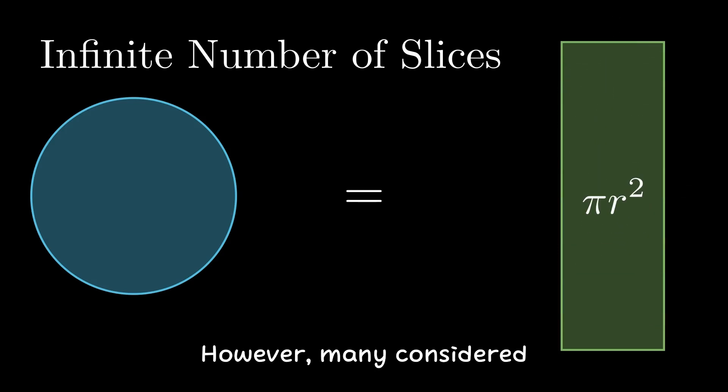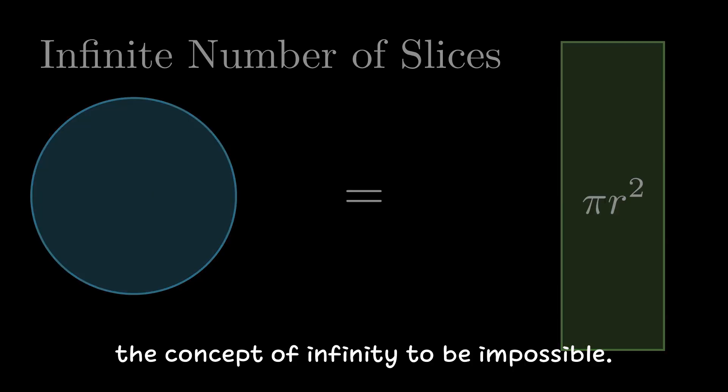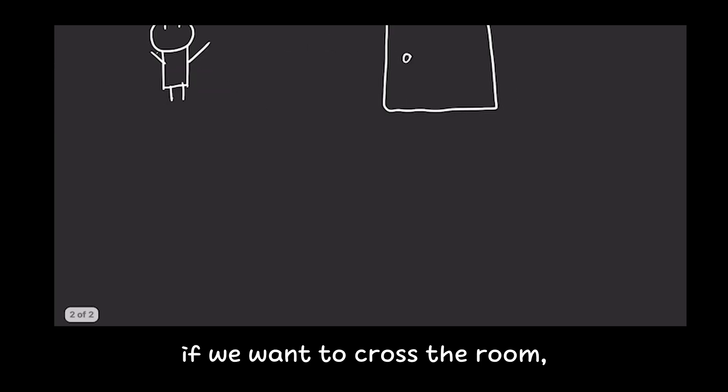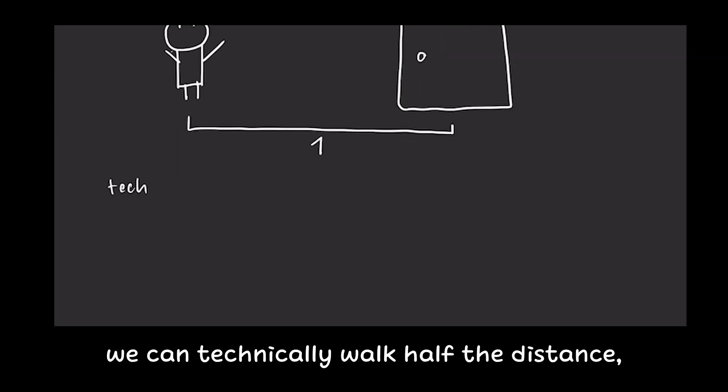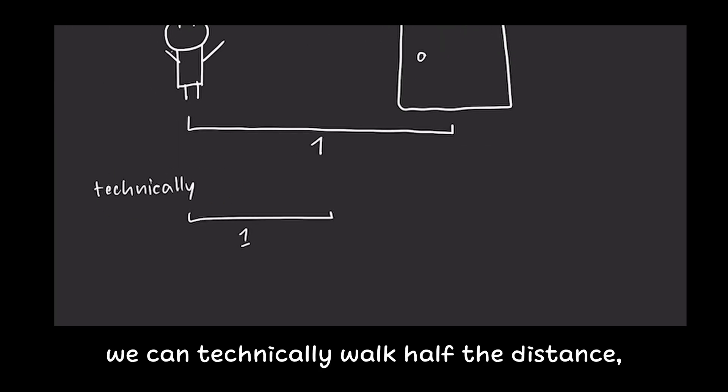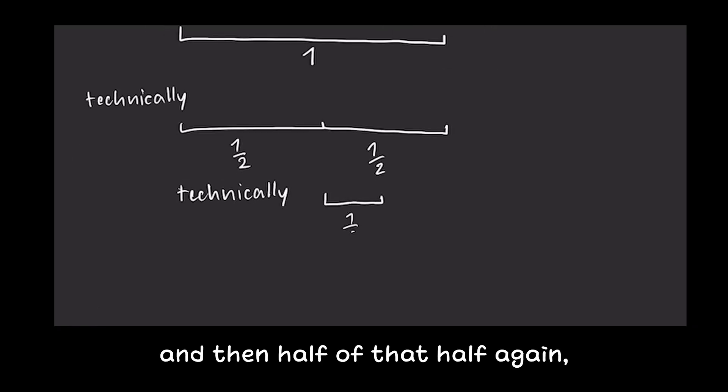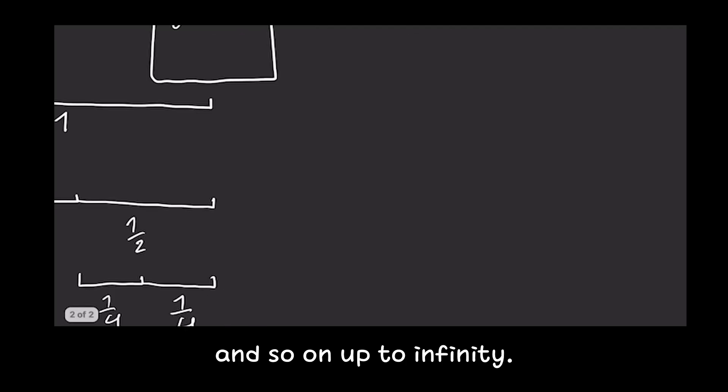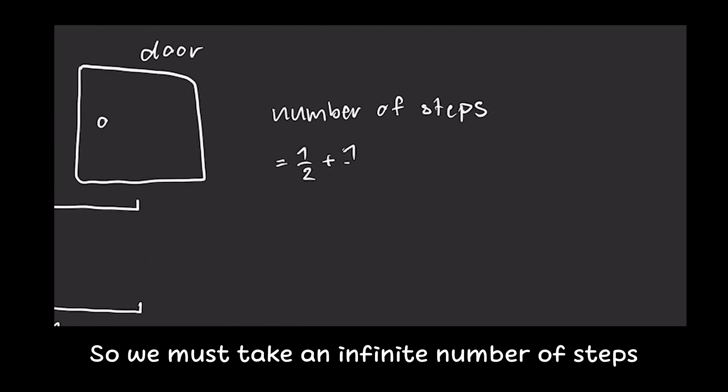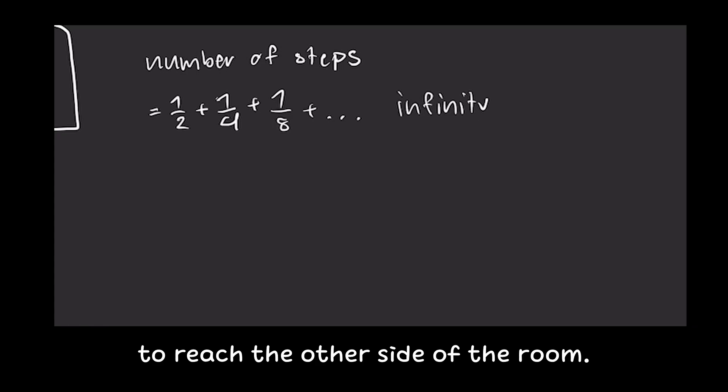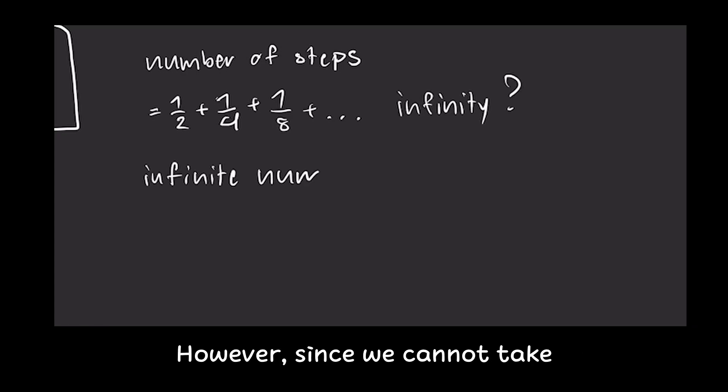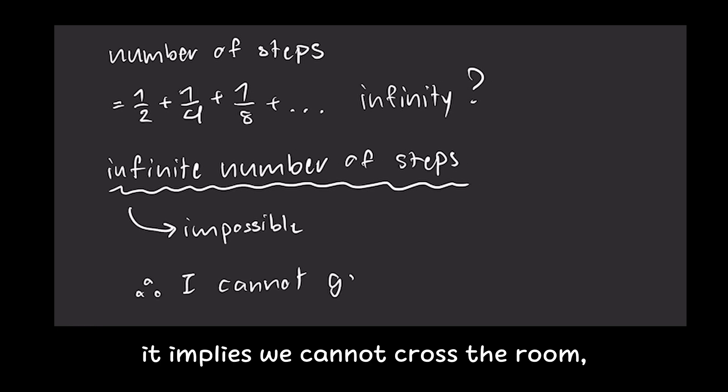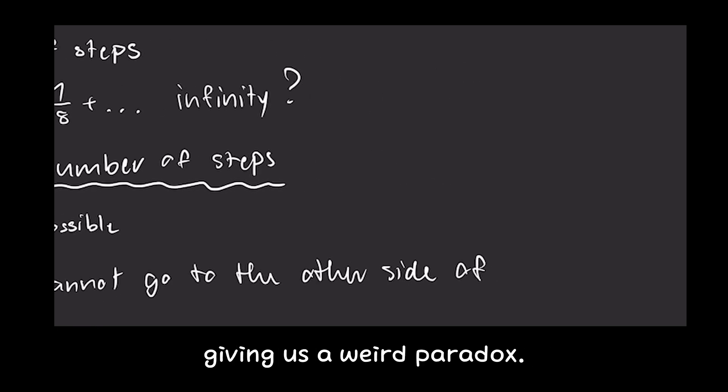However, many consider the concept of infinity to be impossible. There is even a saying amongst ancient Greeks that if we want to cross the room, we can technically walk half of the distance, then half of that half, and then half of that half again, and so on up to infinity. So, we must take an infinite number of steps to reach the other side of the room. However, since we cannot take infinitely many steps, it implies that we cannot cross the room, giving us a weird paradox.